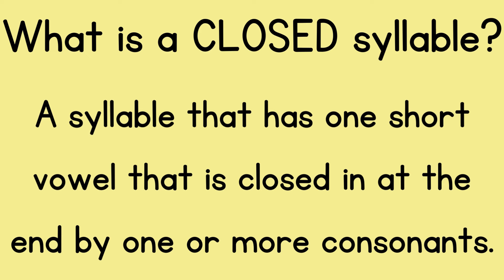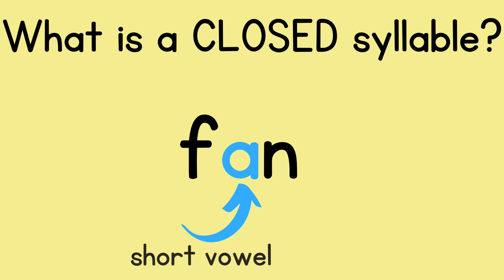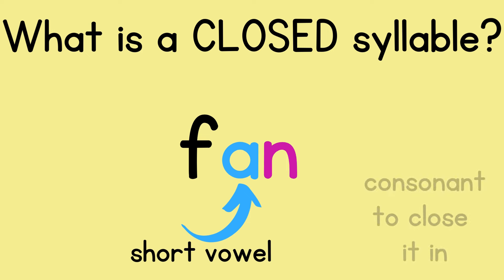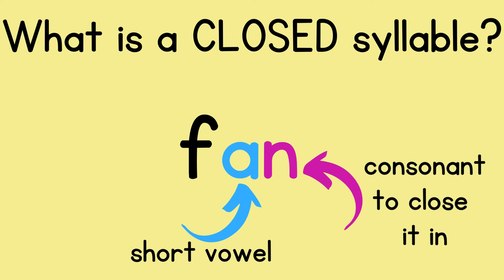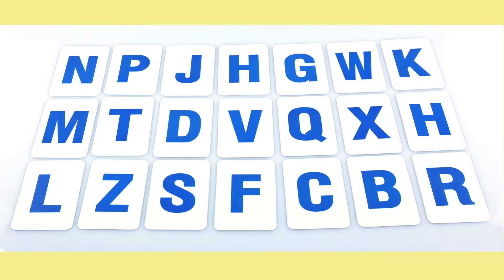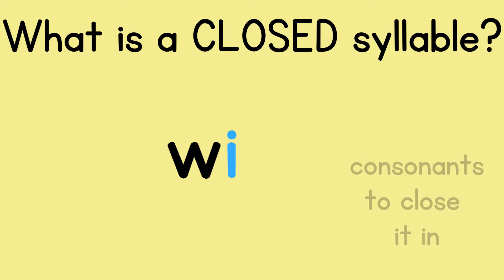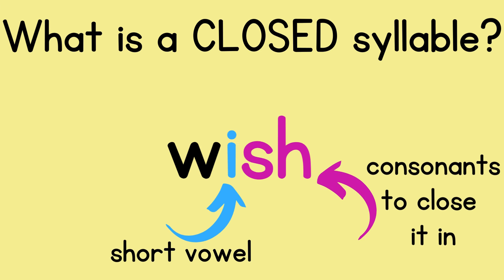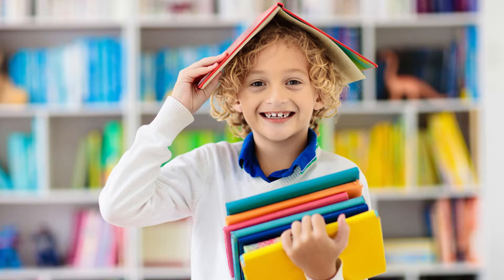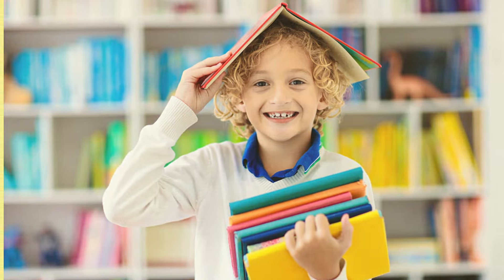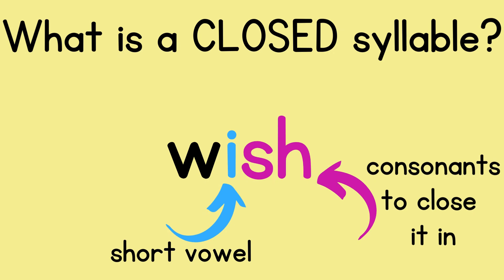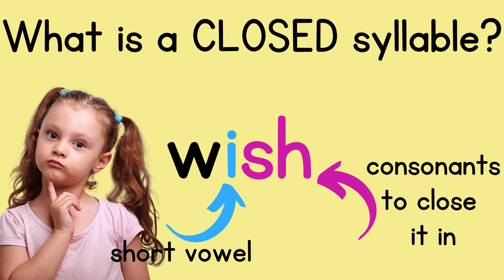A closed syllable has one short vowel where the vowel says its short sound, and it's closed in at the end by one or more consonants. In the word 'fan,' the vowel A is not saying its name; it's saying its short sound 'ah,' and that short vowel is closed in with the consonant N. 'Wish' is also a closed syllable because the I is short and it's closed in by consonants S and H. When I notice a vowel closed in with a consonant, I know the vowel should be short.